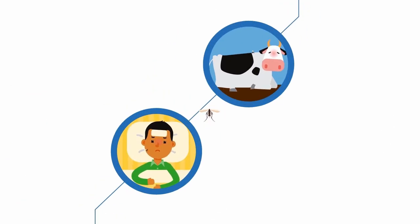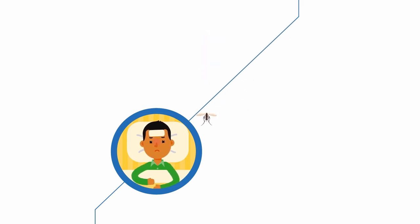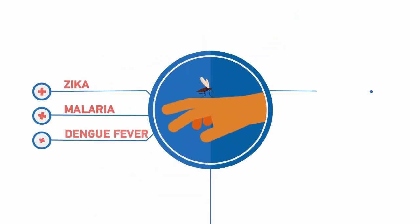Diseases spread when the female mosquito bites an infected person or animal and transfers the disease to another person it bites.